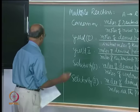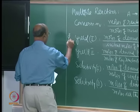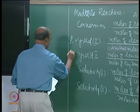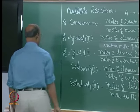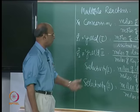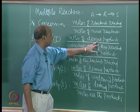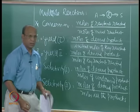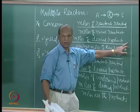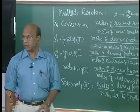Once we have these definitions, normally we try to use yield 1 as φ1 and yield 2 as φ2. These are the two things we generally use. Conversion will always be there as xA. For example, the Carberry book uses φ1. In that case, with desired product R, φ1 equals CR divided by CA0.